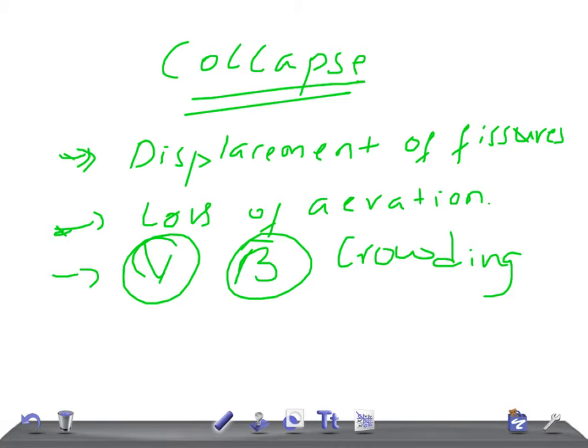These are the direct signs: displacement of the fissure (most reliable), loss of aeration, and vascular and bronchial crowding.